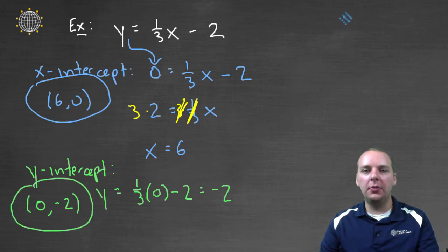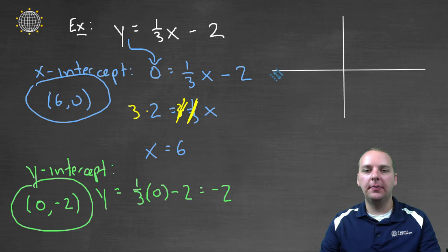Up here, I will squeeze in a quick little graph, let's make that a white line. Okay, and here's the x-axis. And I'm just going to give a ballpark sketch of the graph, nothing too fancy. Let's see, the x-intercept is at one, two, three, four, five, six. And the y-intercept is at negative one, two.